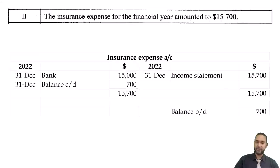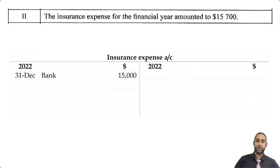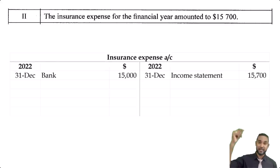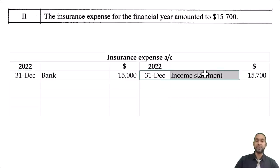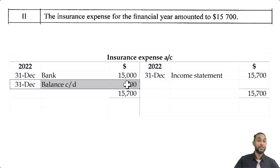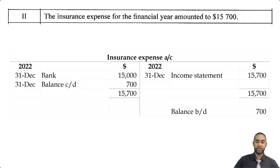The total on the debit side is $15,700, as is the total on the credit side. The detail for the debit side is income statement $15,700 — the full amount of the expense incurred, regardless of how much was actually paid, goes to the income statement. We paid $15,000 and incurred $15,700, so the $700 balance is the amount left unpaid for insurance at the end of the period, carried down on the credit side as a liability.